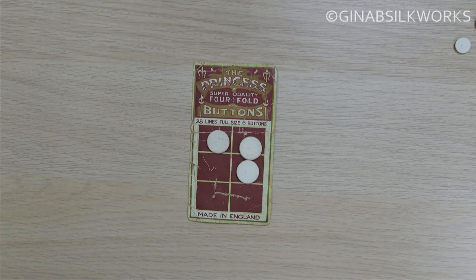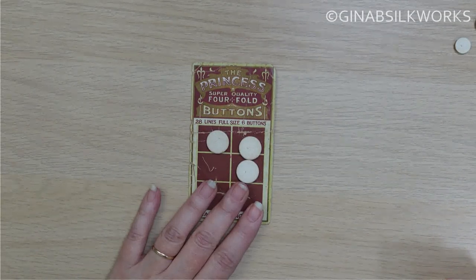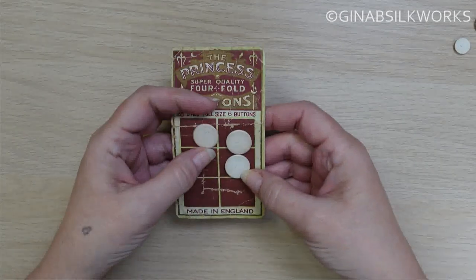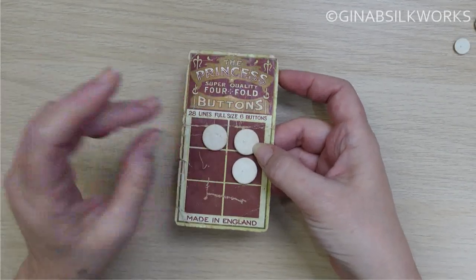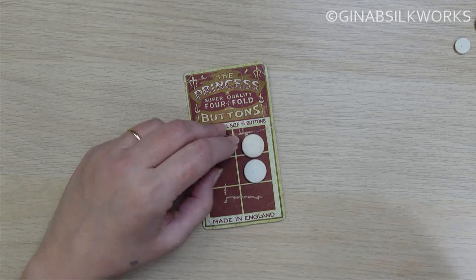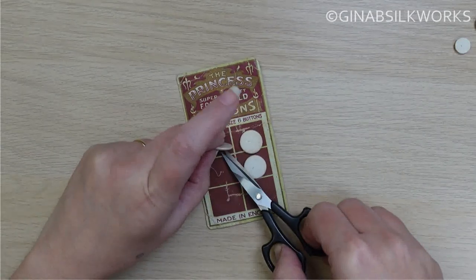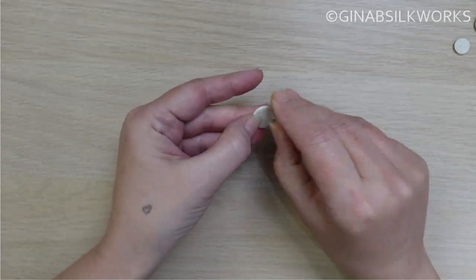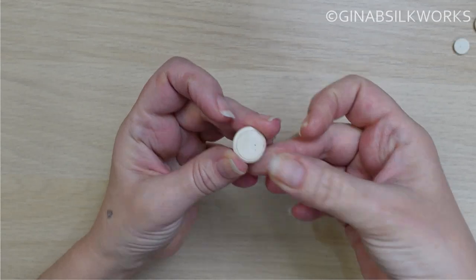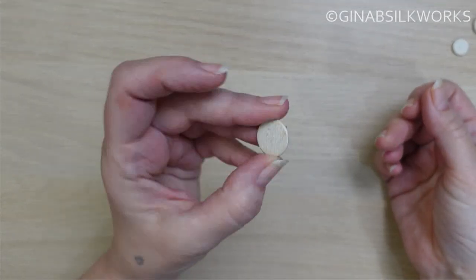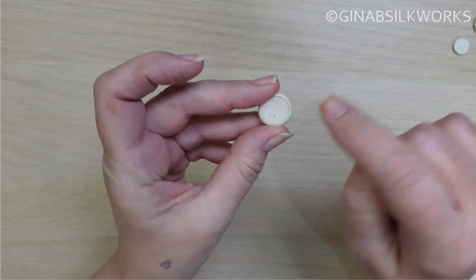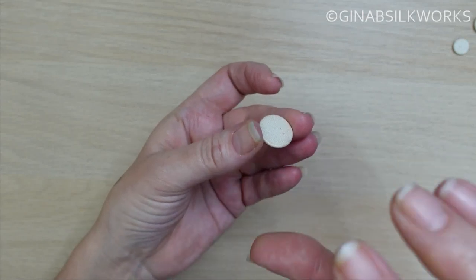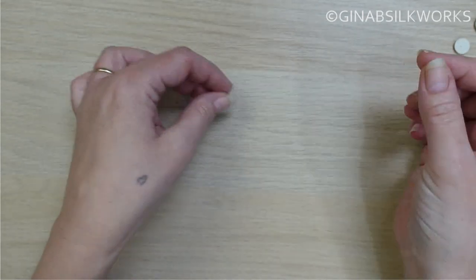Let's do a button autopsy and find out, at least in this case, what four-fold actually means. I'll use one of the ones that is more marked and start a little button autopsy. As you can see, the button is made in at least two parts - it's got a top and a bottom. It will be made using a press and dies of some description.